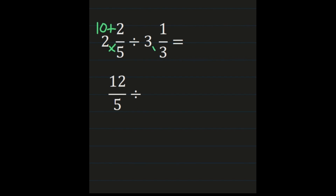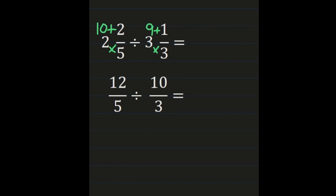Then, we're dividing by 3 and 1 third, which we also need to turn into an improper fraction by multiplying our denominator by our whole number. 3 times 3 is 9, then adding our numerator: 9 plus 1 is 10. Our denominator of 3 remains the same. Now that we've turned our mixed numbers into improper fractions, we're going to work the steps of dividing fractions.